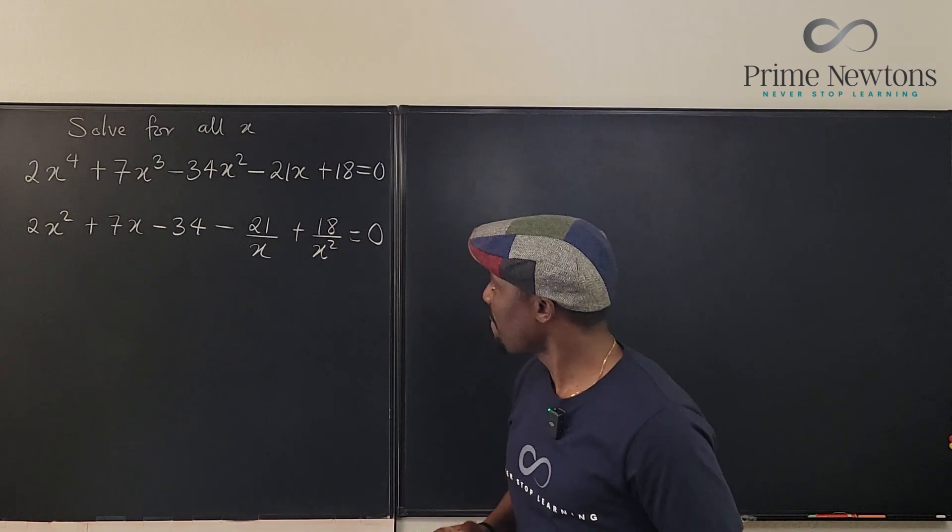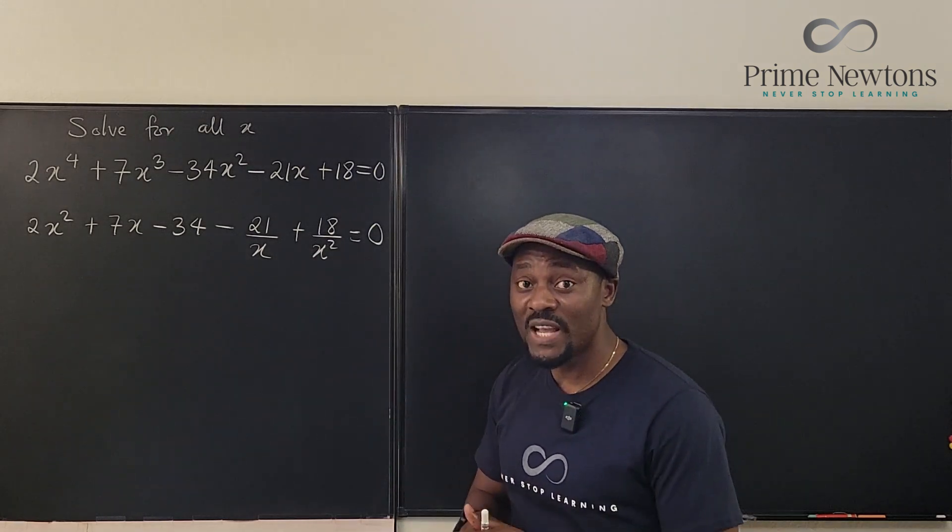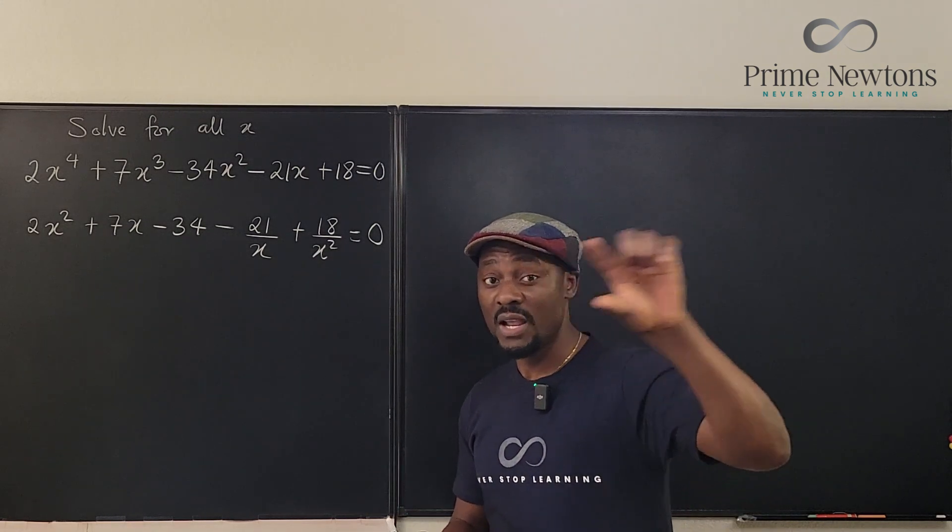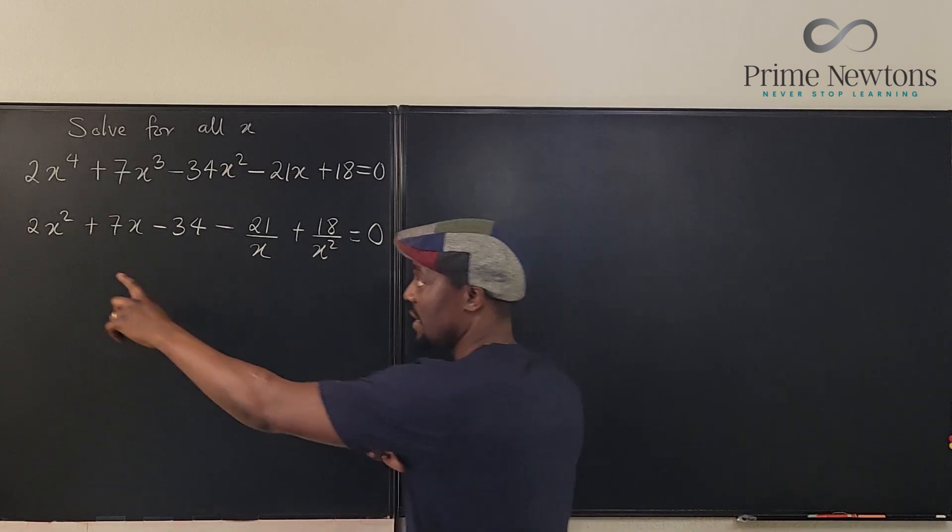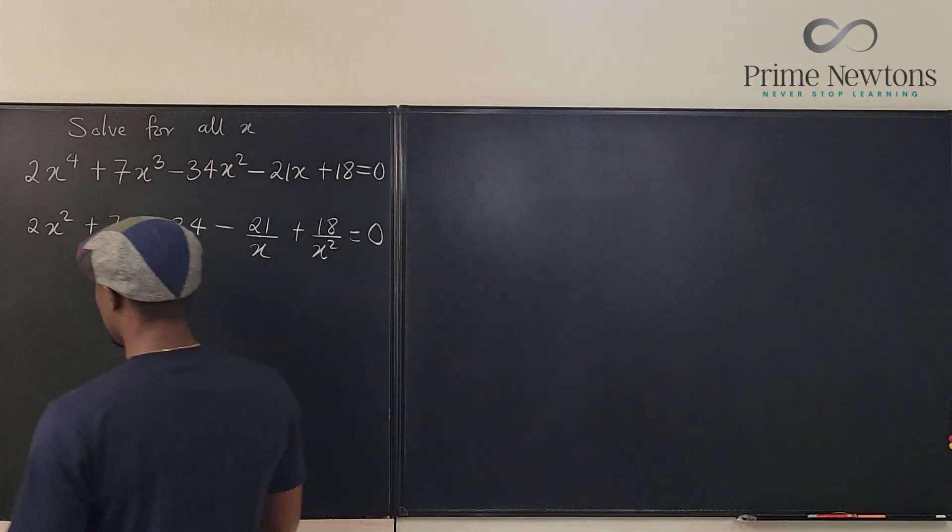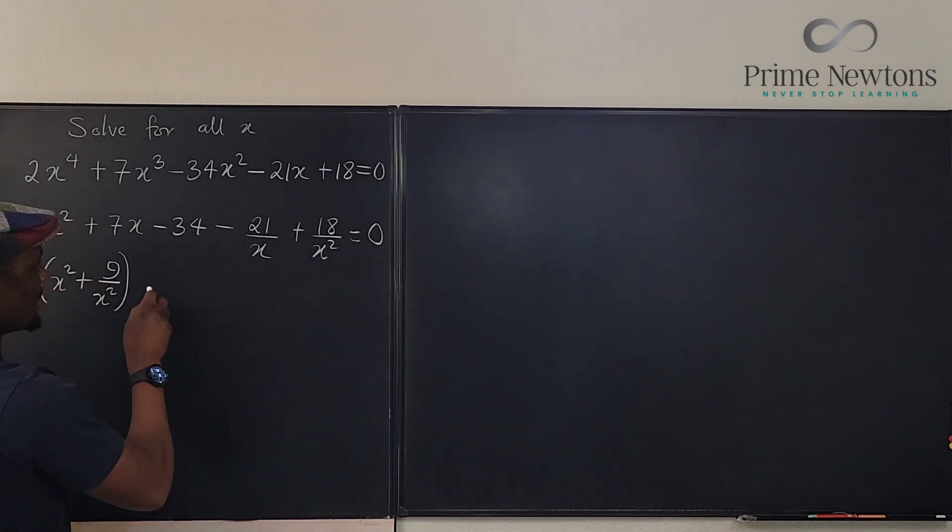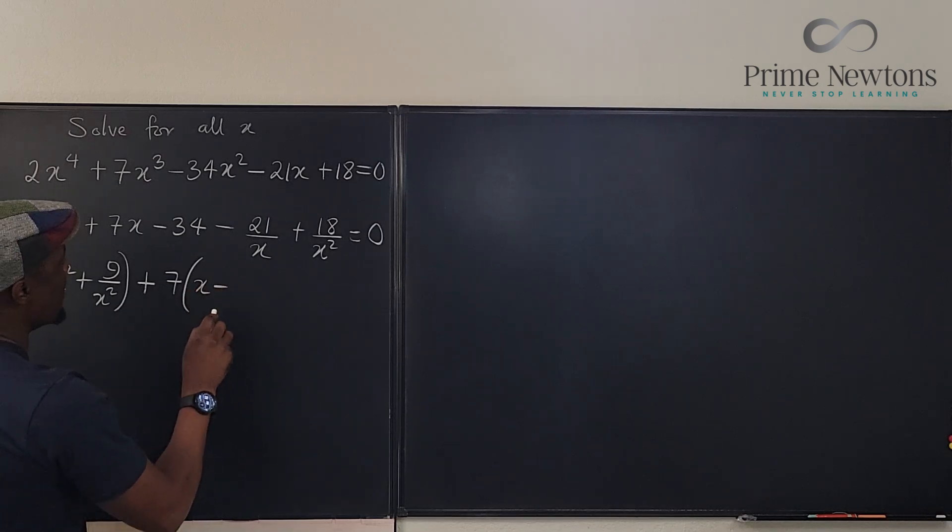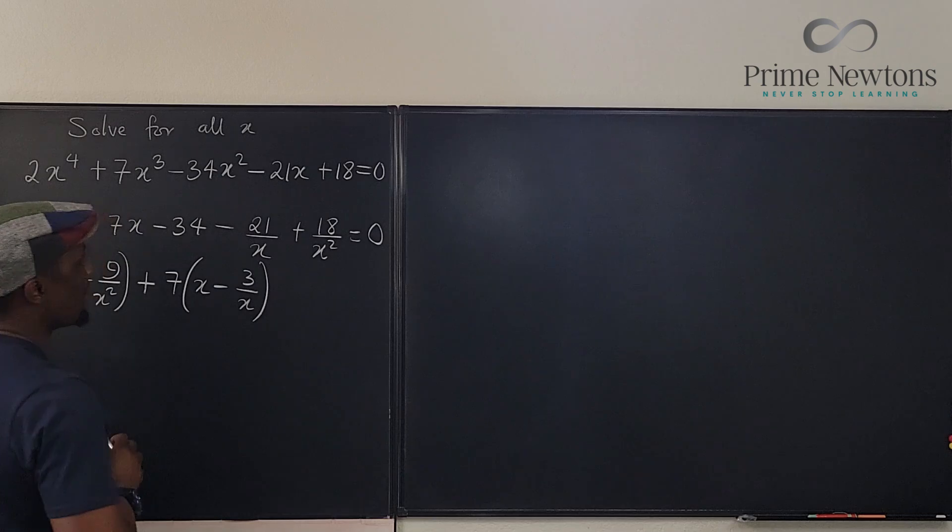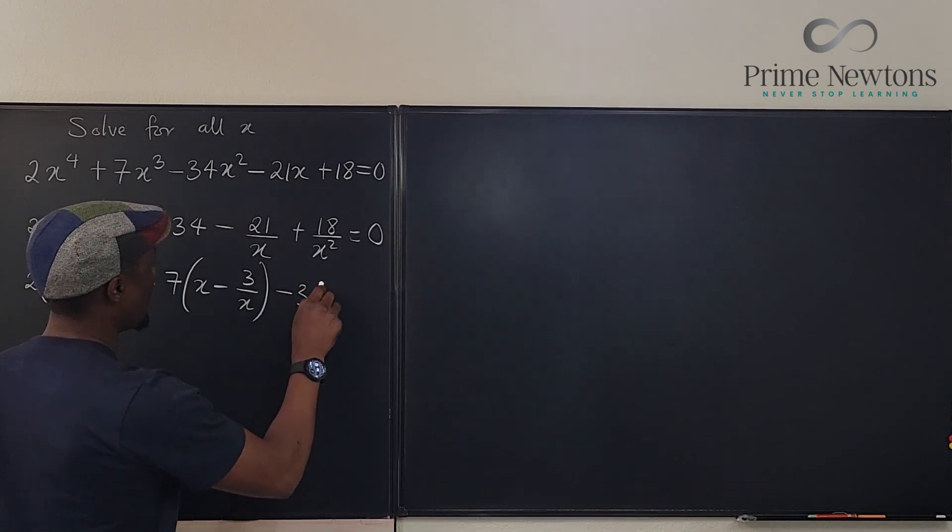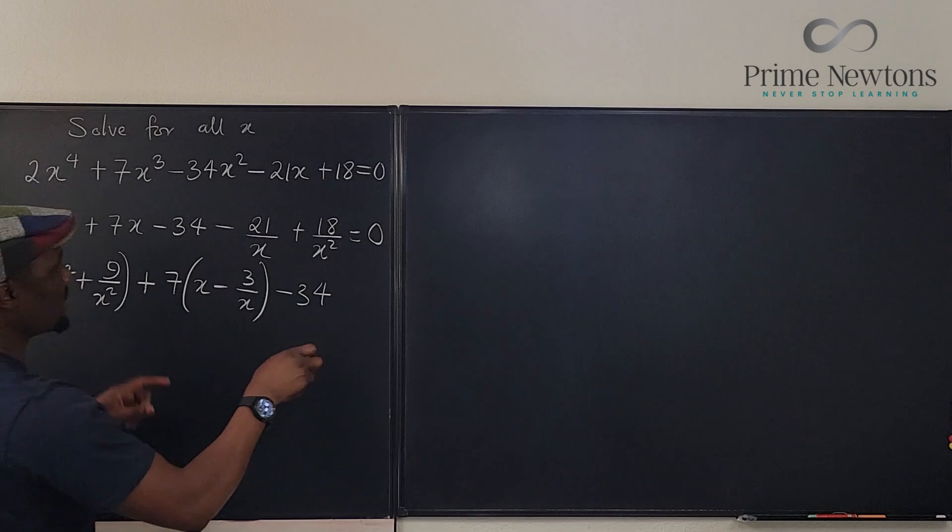Now with what we have, you gather all the terms that contain x² either linear or rational. You note that this and this have x² together. So if I put these two together, I can write 2 times x² plus 9 over x². If I gather this and this together, this is going to be plus 7 times x minus 3 over x, and then I have minus 34. Did you see that? That's interesting. Equals zero.